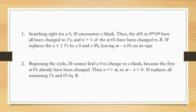Or 2. Beginning the cycle, machine cannot find a 0 to change to a blank because the first m zeros have already been changed.